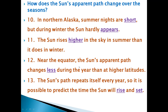Number 12: Near the equator, the sun's apparent path changes less during the year than at higher latitudes. The answer is 'less'. The sun's path repeats itself every year, so it is possible to predict the time the sun will rise and set. The two answers are 'rise' and 'set'. In summary, the sun rises highest in summer and lowest in winter.